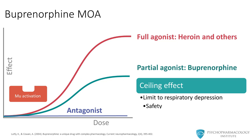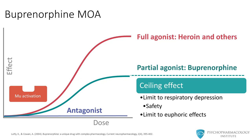The ceiling effect of buprenorphine means that there is a limit on the respiratory depression, and this is one of the reasons why this medication can be safely prescribed. Also, taking more buprenorphine does not lead to additional euphoric effects. This is very different from full agonist opioids like oxycodone, heroin, or morphine, where taking additional doses generally means you get additional euphoria.